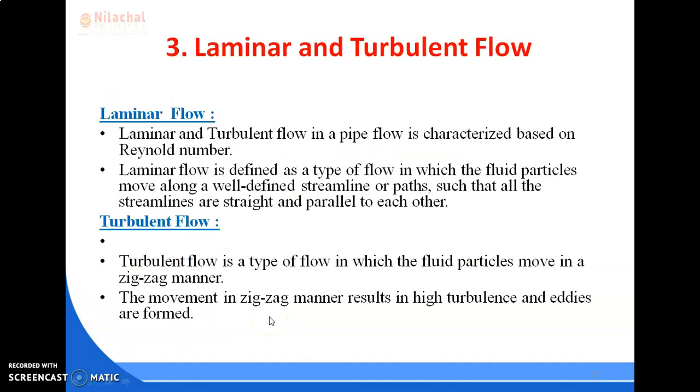Next is laminar. Laminar and turbulent flow in a pipe flow is characterized based on the Reynolds number. Laminar flow is defined as the type of flow in which the fluid particles move along a well-defined streamline or path such that all the streamlines are straight and parallel to each other.